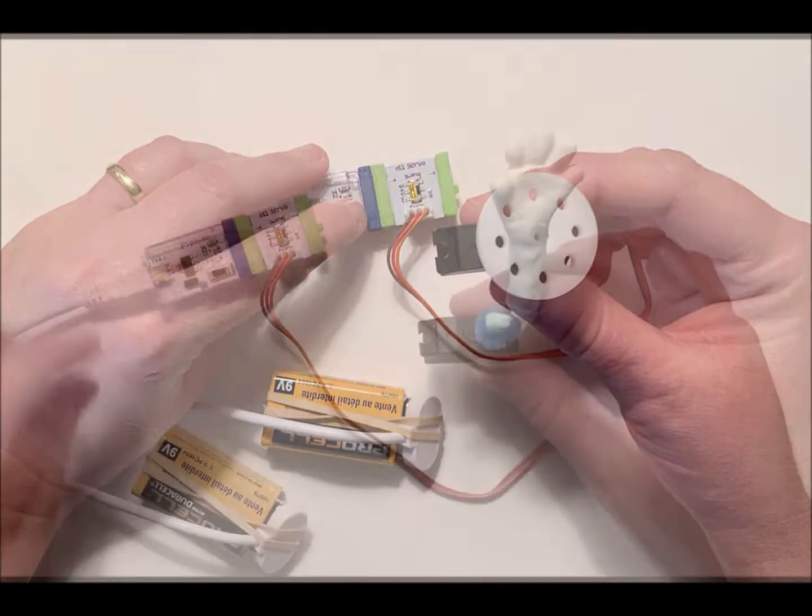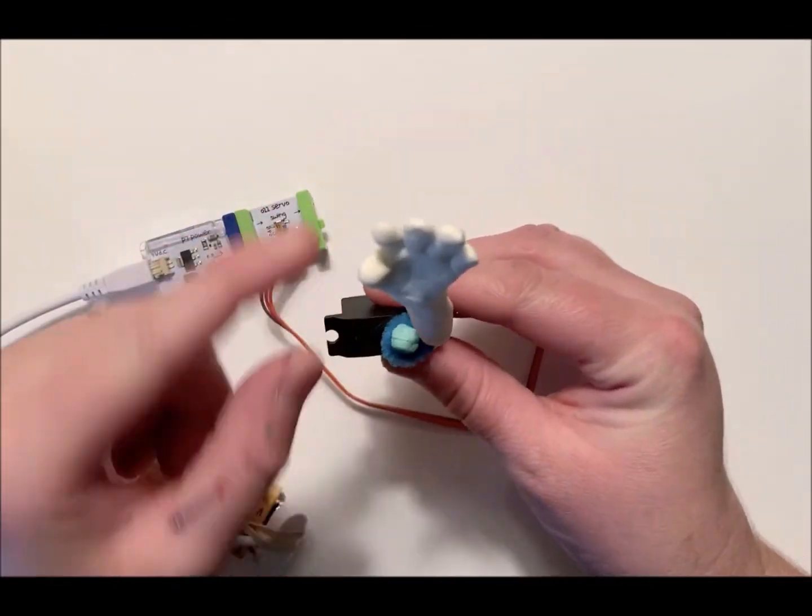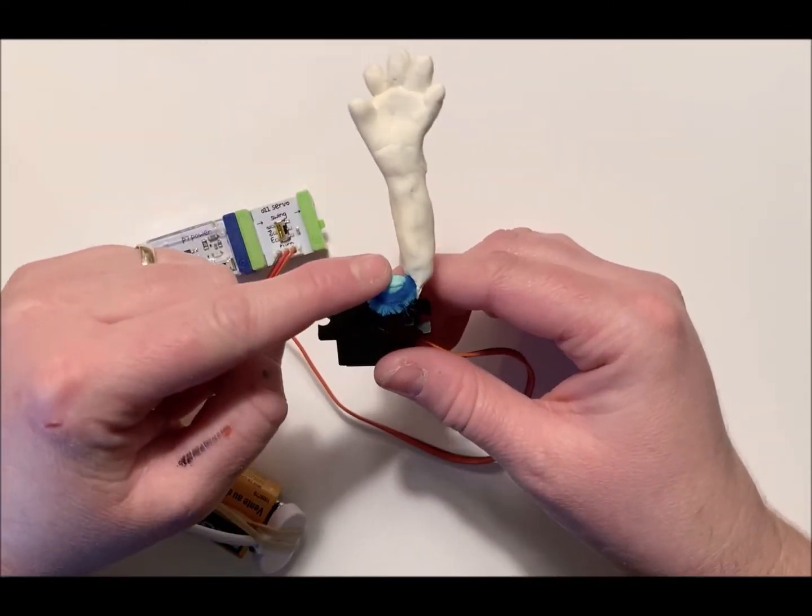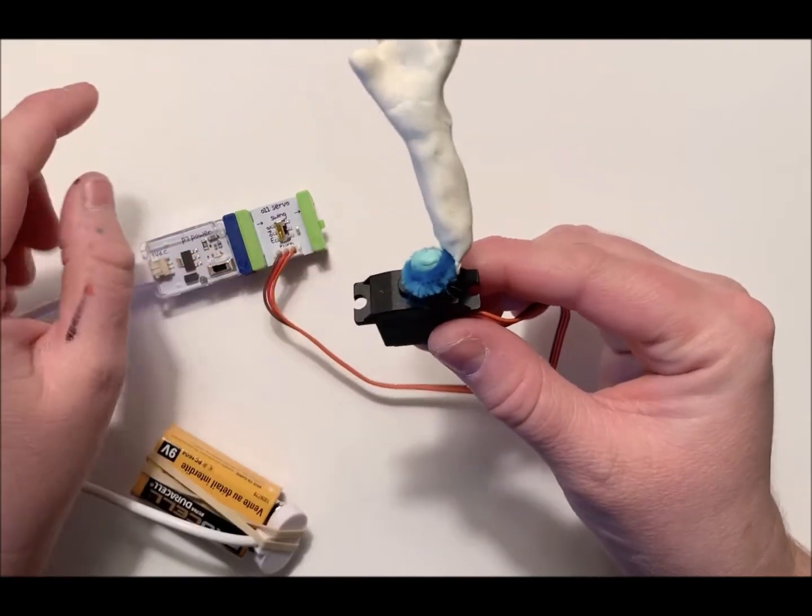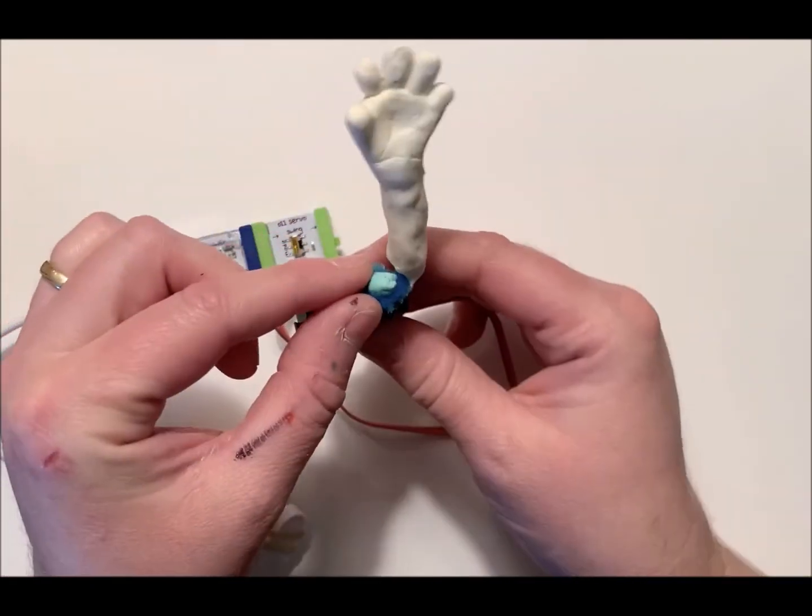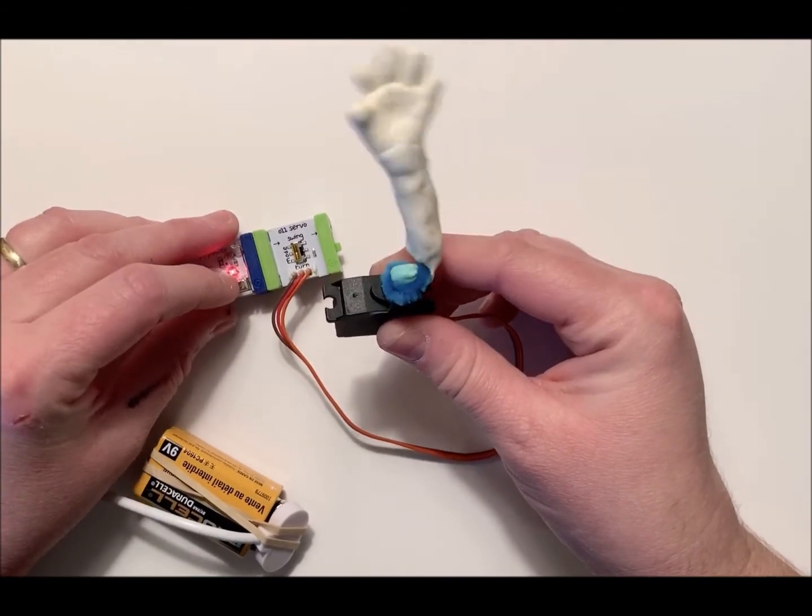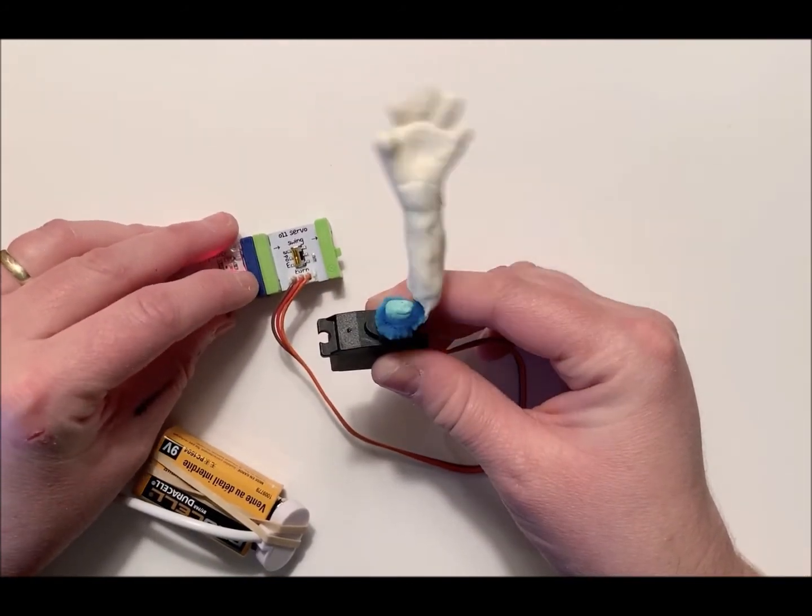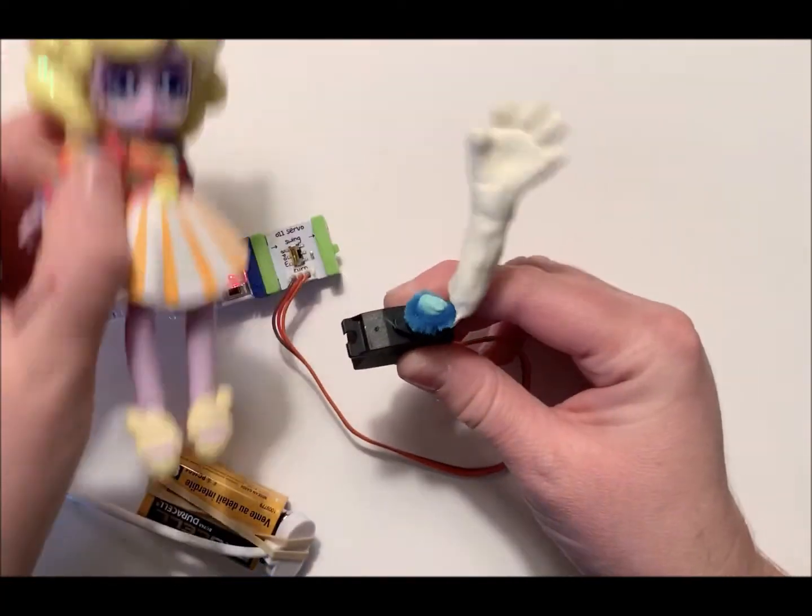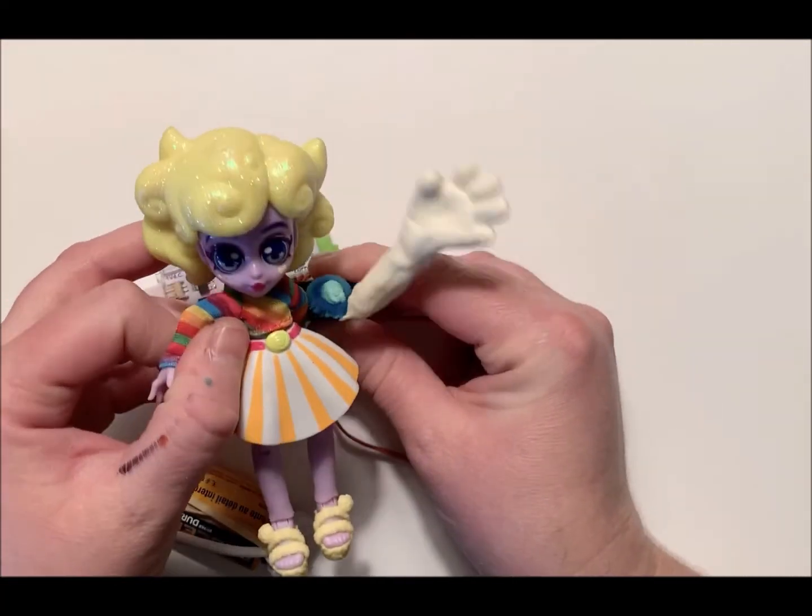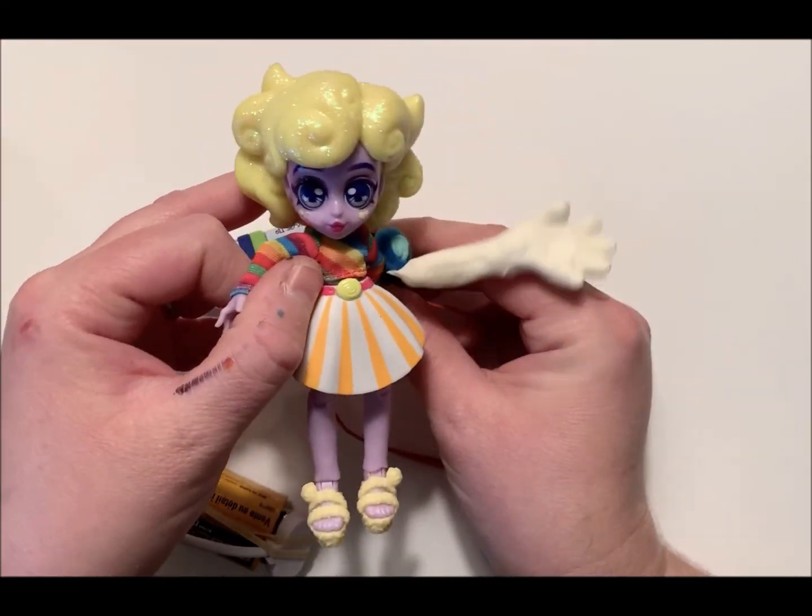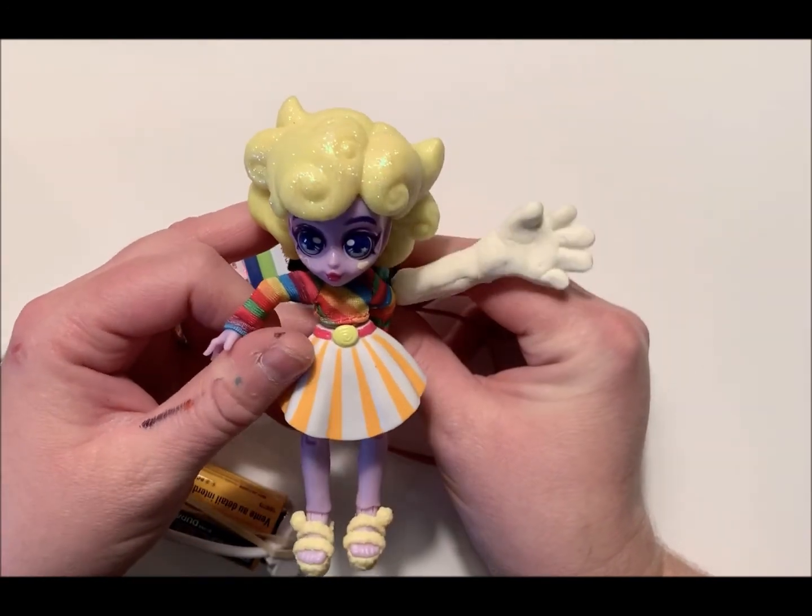What I've done is I actually made a hand out of model magic clay and attached it to this with a little bit of putty and a pipe cleaner that I put inside of the hand. So if I turn it on, it will actually rotate to wave, and I could make this look a little bit more realistic by adding it next to a character such as this doll, and now it looks like she's waving hi.